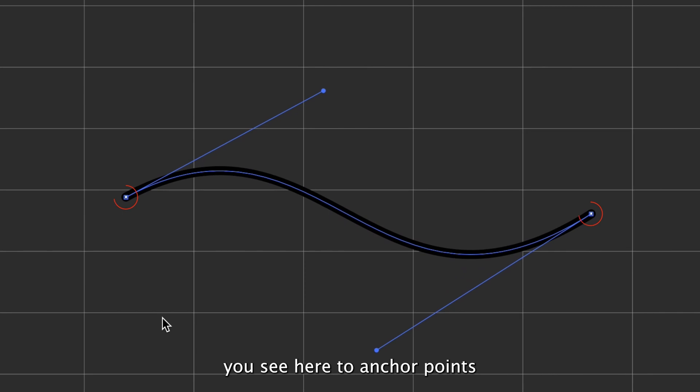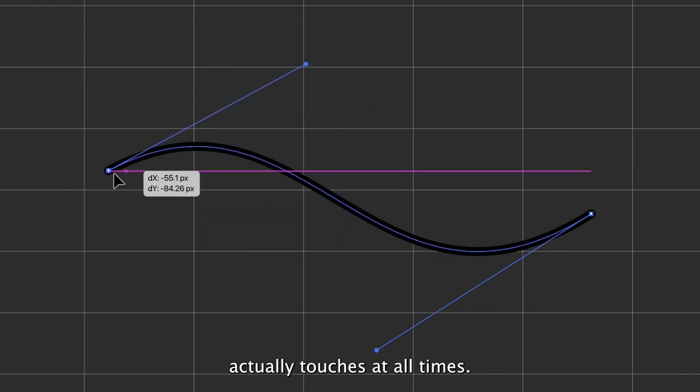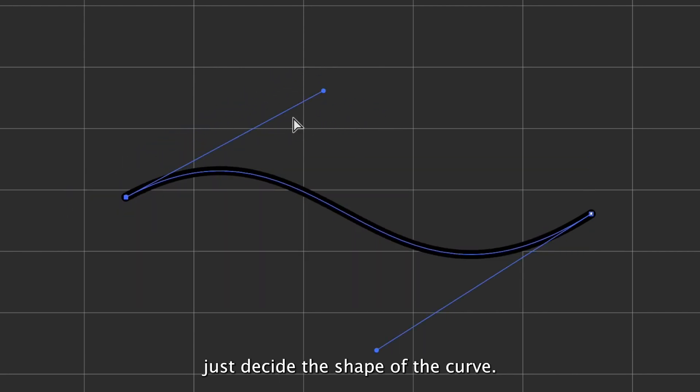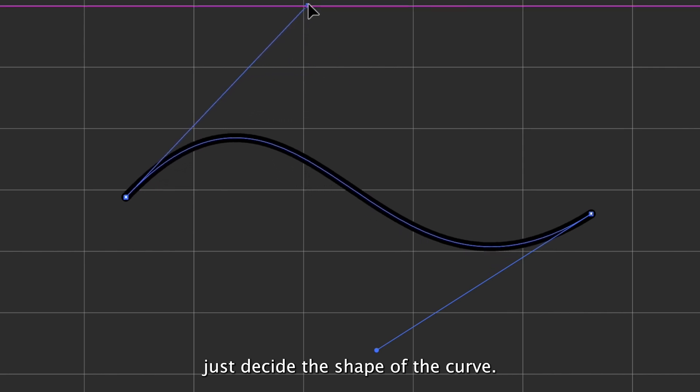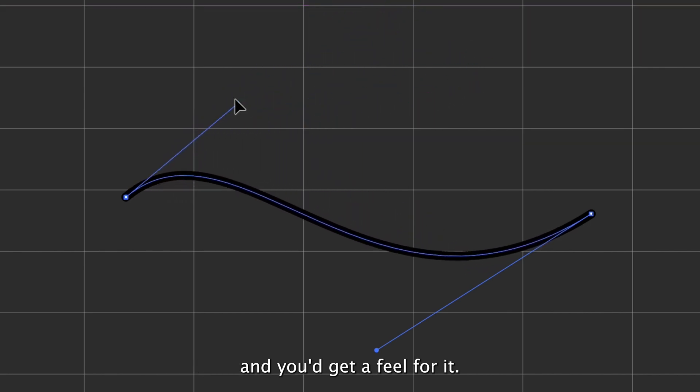You see here two anchor points and two control points. You can see for yourself that the anchor points are the end points that the curve actually touches at all times and the control points just decide the shape of the curve. You can play with it for a few minutes and you'd get a feel for it.